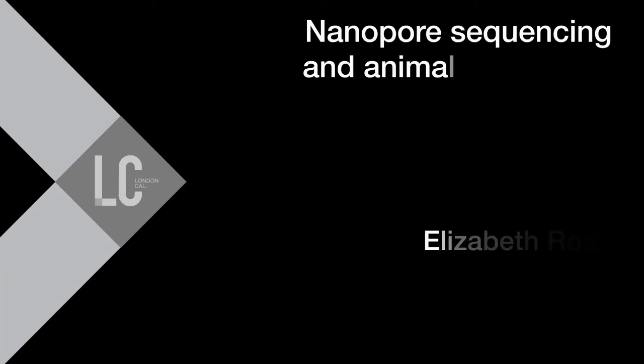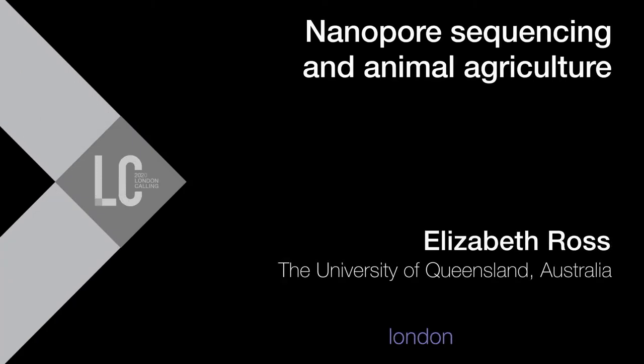Hello, I'm Elizabeth Ross from the Queensland Alliance for Agriculture and Food Innovation at the University of Queensland in Australia. Today I'm going to talk about the application of nanopore sequencing to animal agriculture and some work that we've been doing applying nanopore to look at economically important traits that are also important for welfare.